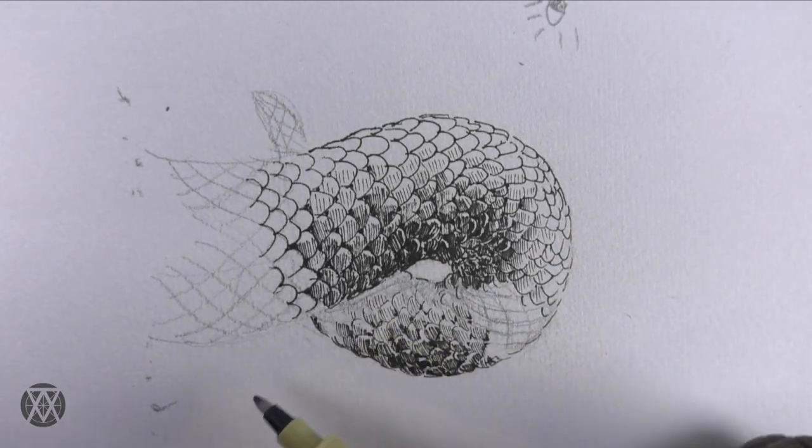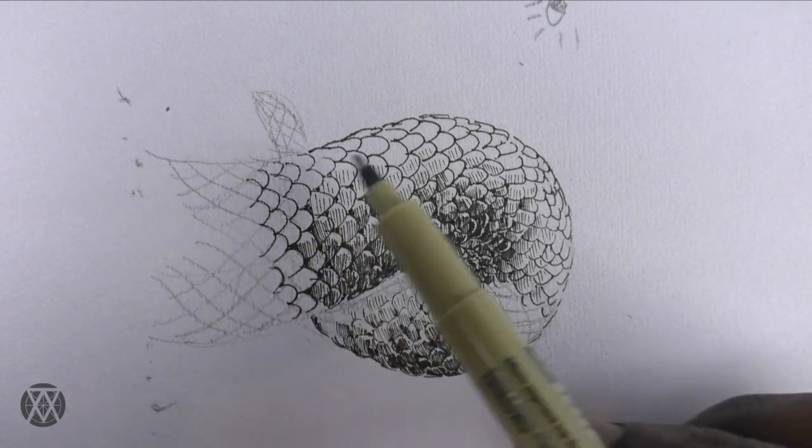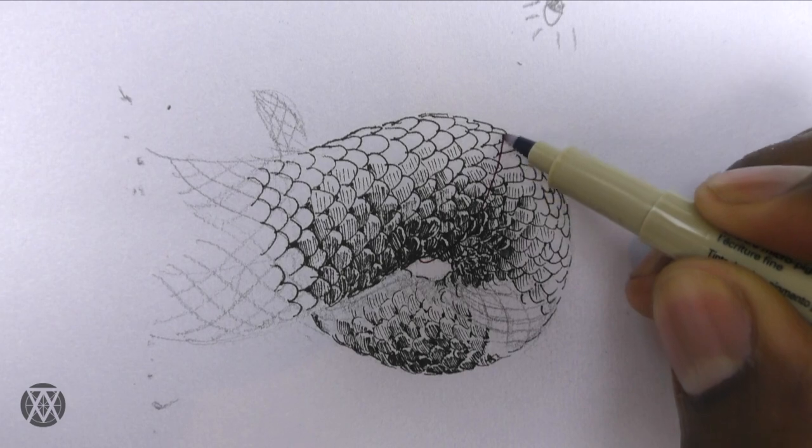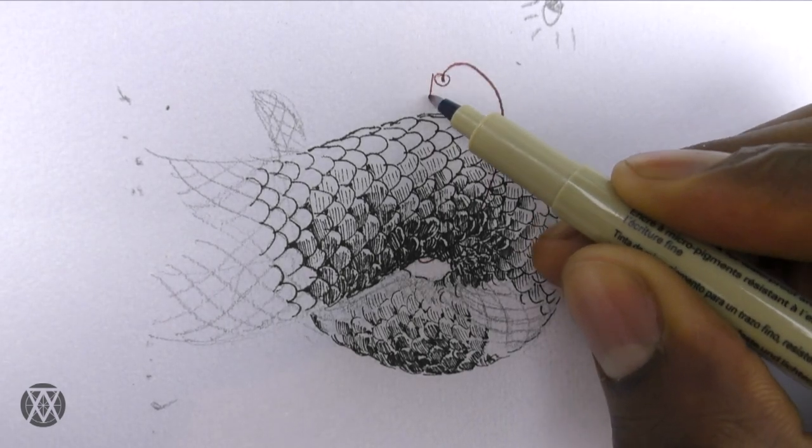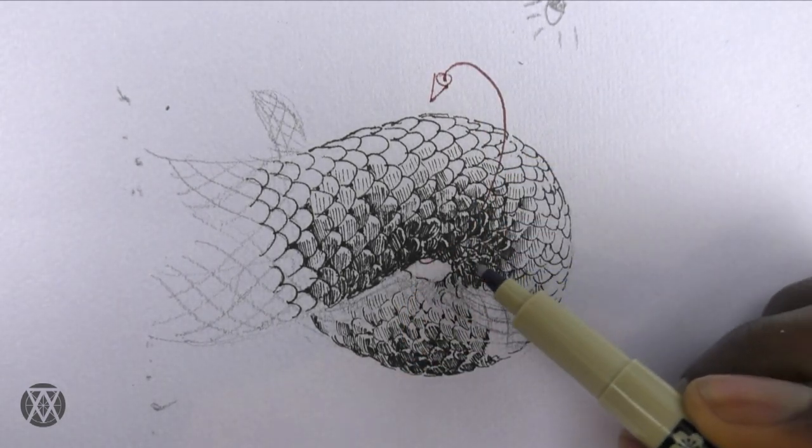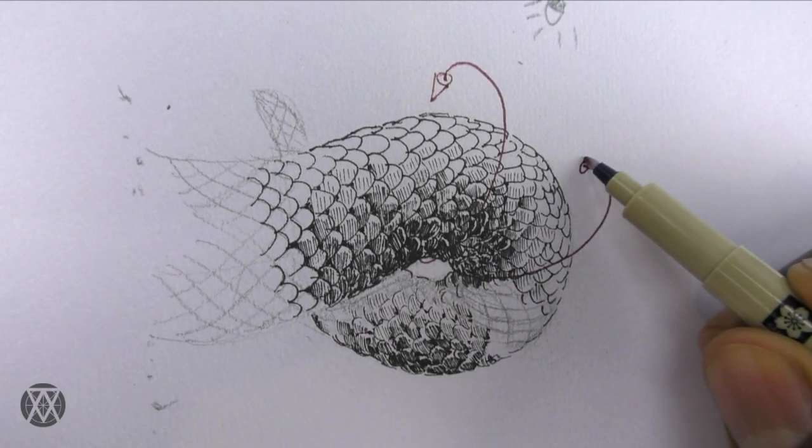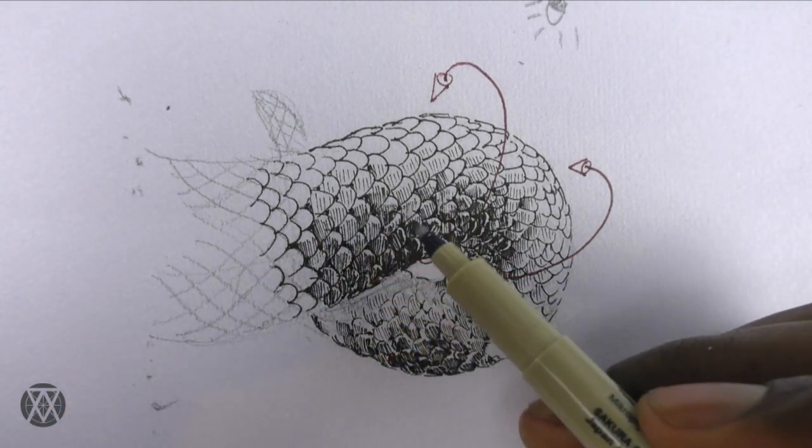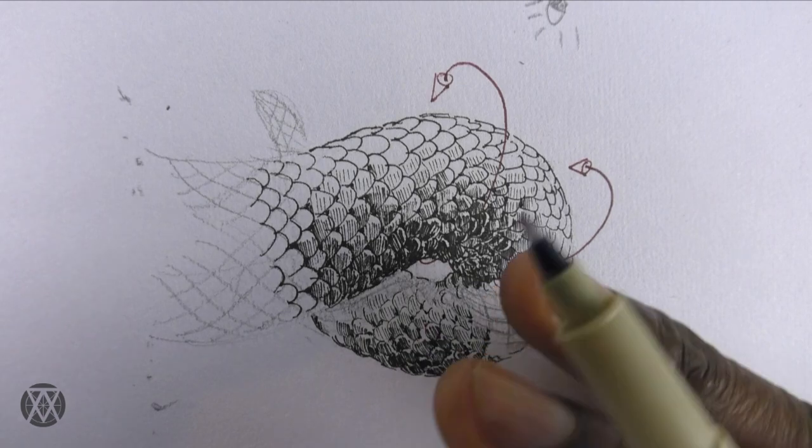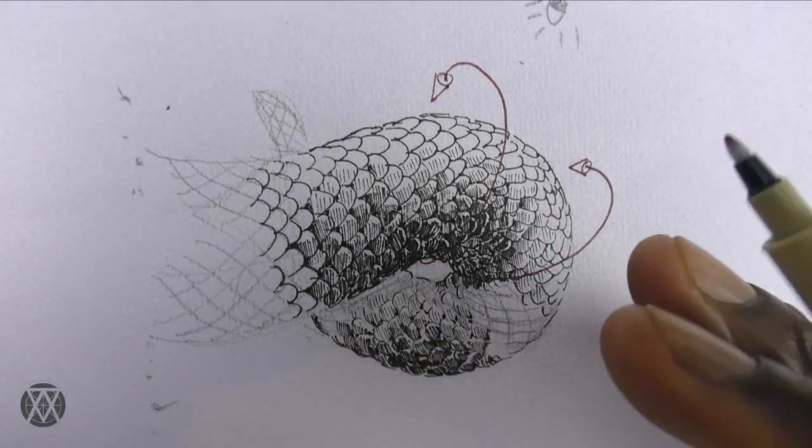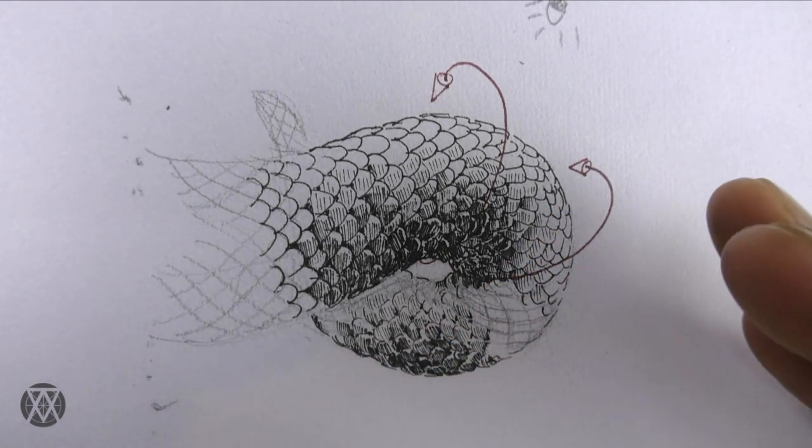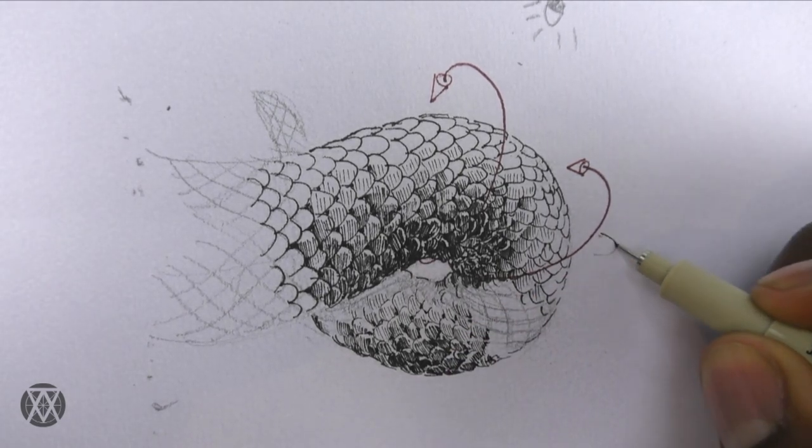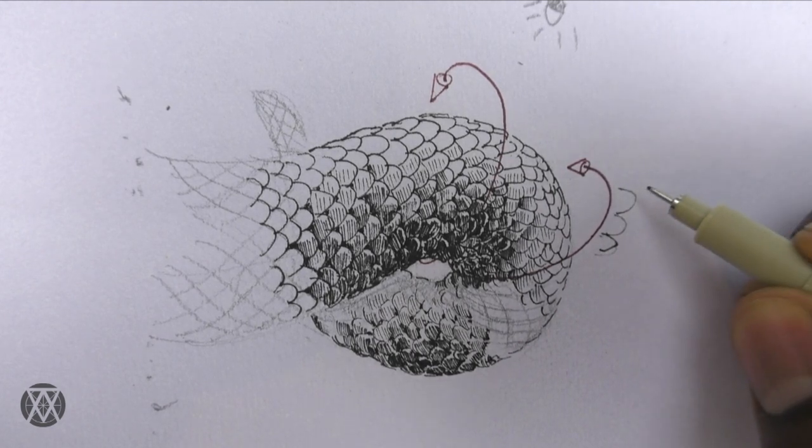You see, I'm using the same strategy that I discussed before. I'm imagining this form as three-dimensional. The scales are wrapping around this form. I drew the grid, then placed the scales on the grid, and then rendered or created that gradation to show that transition from shadow to light and light to shadow. And essentially this is all I'm doing.